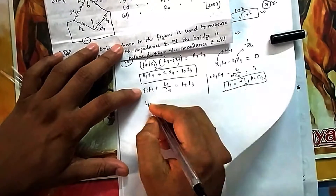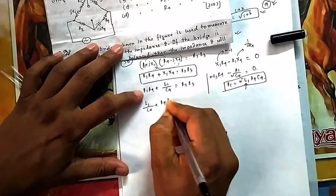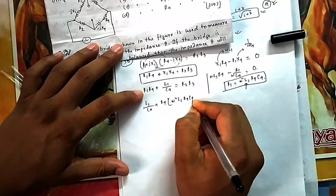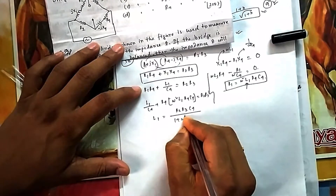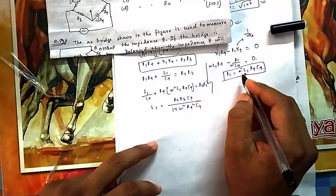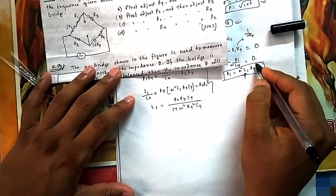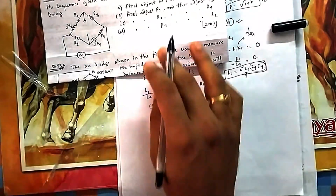From the imaginary part: X1·R4 = R1·X4, giving ωL1·R4 = R1/(ωC4), so R1 = ω²·L1·R4·C4. Substituting R1 back into the real part equation and solving for L1: L1/C4 + R4·(ω²·L1·R4·C4) = R2·R3. Rearranging, L1 = R2·R3·C4 / (1 + ω²·R4²·C4²). The expression shows L1 depends on R2, R3, R4, and C4.